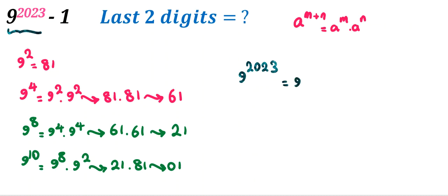This is equal to 9 to the 2020 times 9 cubed. 9 to the 2020, by power rule, we know that a to the m times n equal to a to the m to the n. It is equal to 9 to the 10 to the 202 times 9 cubed.